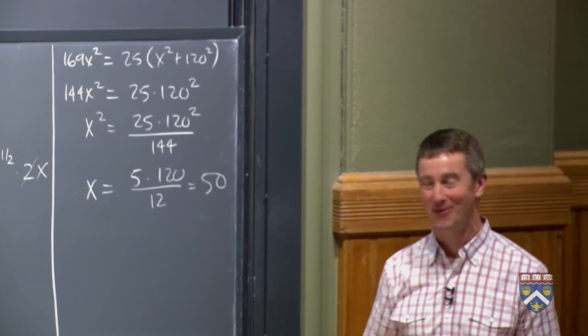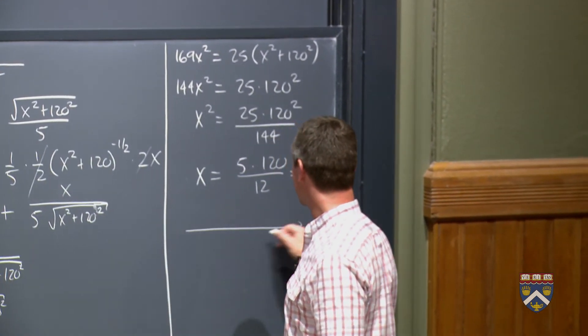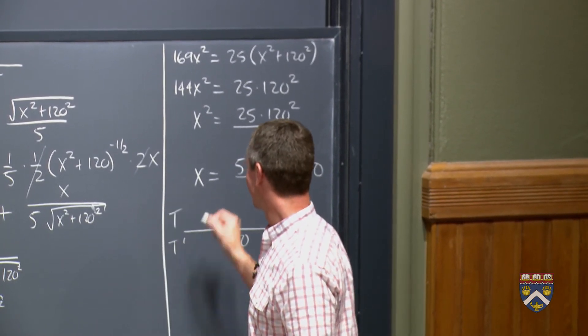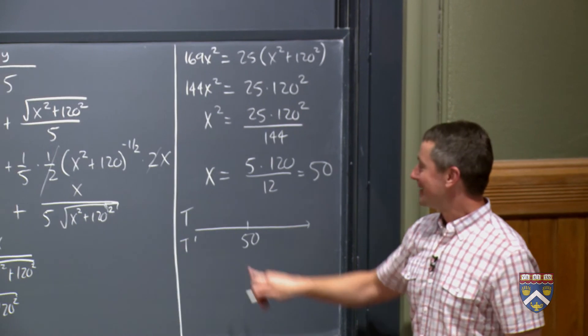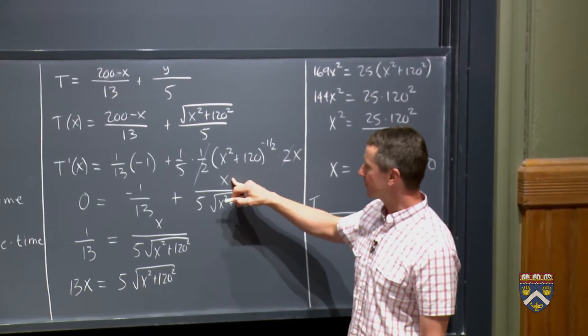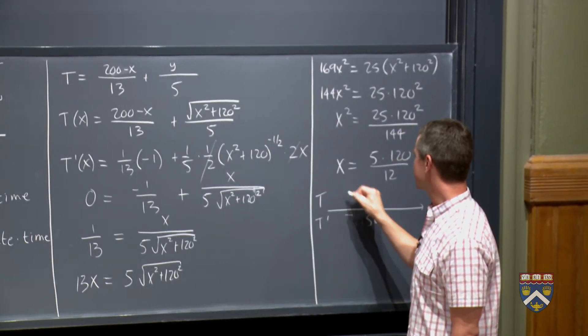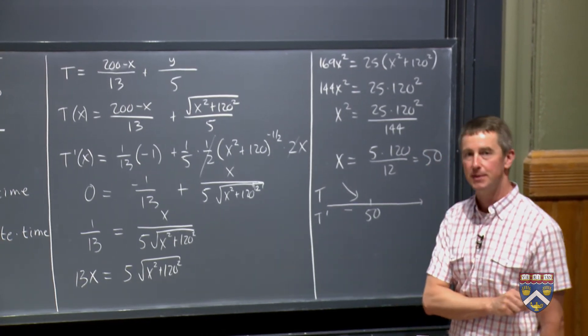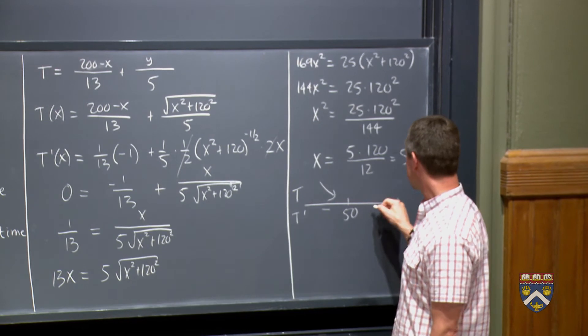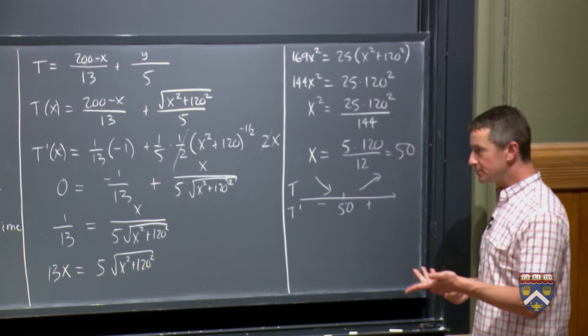Now, we of course, we want to make sure that this is actually the min, because we don't want to be taking the longest possible time to get to this poor struggling swimmer here. So we need to pick a number over here. I think we can plug in 0. If I plug in 0 for this x, this whole fraction becomes 0. So I just get a negative 1/13. So t prime is negative out there, which is good for us, because that means t is decreasing. And if we pick a number bigger than 50, you'll see that you get a positive. So in fact, this is the min.